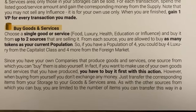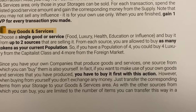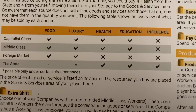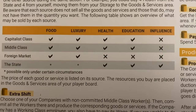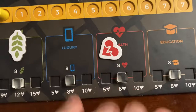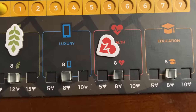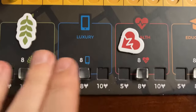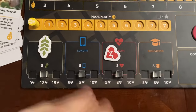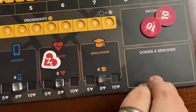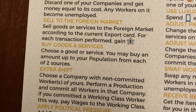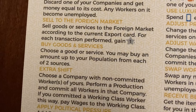If you buy goods and services, you can buy from up to two sources and buy as many resources as your current population. The player aid shows what the capitalist class can sell, what the middle class can sell, and what you can buy from the foreign market or the state. If you buy from yourself as the middle class player, you're essentially taking them for free, and then the working class can no longer purchase those goods from you.